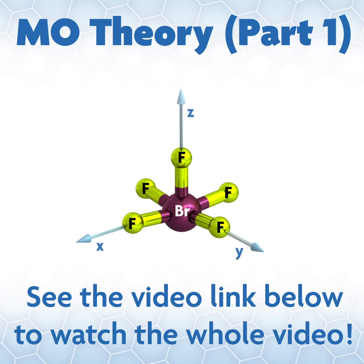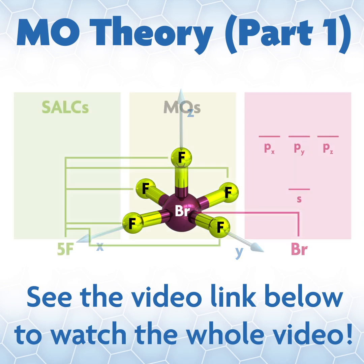In this case, the Z axis will be along the axial F–Br bond of the square pyramidal structure. We'll put the X and Y axes along the Br–F bonds in the equatorial plane. Bromine is the central atom that sits where all symmetry operations meet, and we will make bromine one side of our MO diagram.